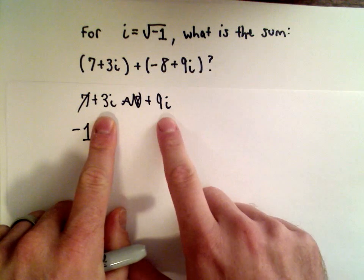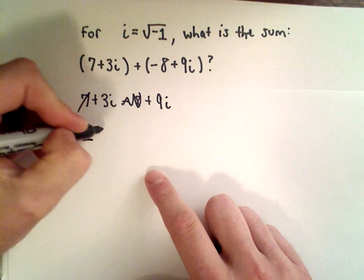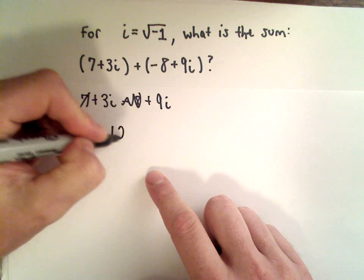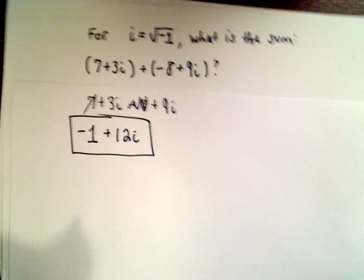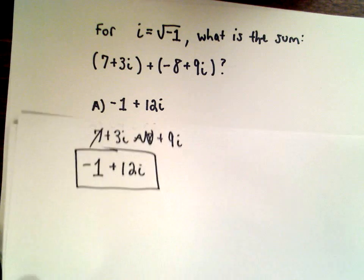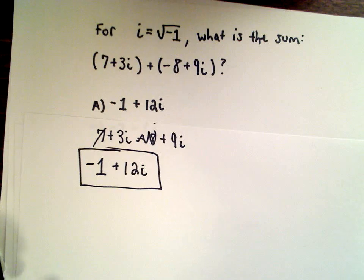And then we're left with 3i plus 9i. That's going to leave us with positive 12i. And that's going to be our solution. So that would be answer choice number A in this case.